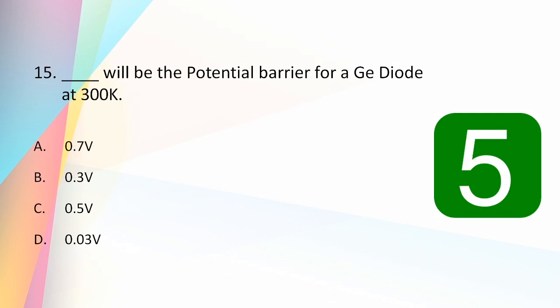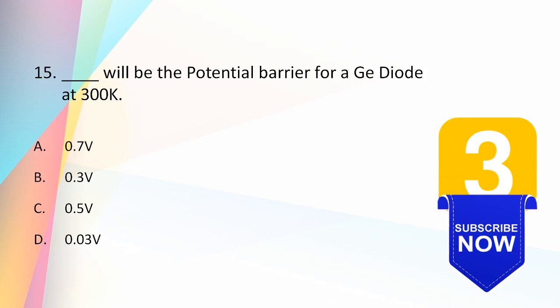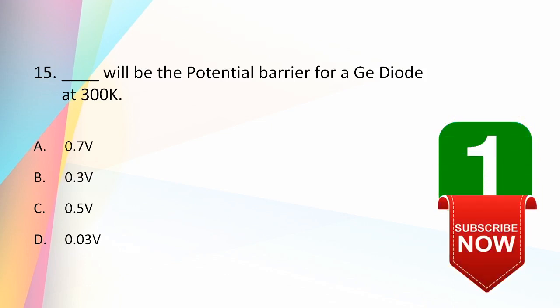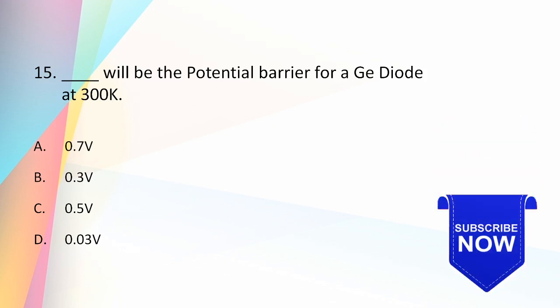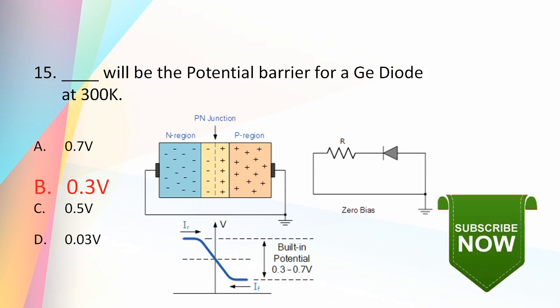For a germanium diode, the potential barrier at 300 Kelvin is 0.3 volts.